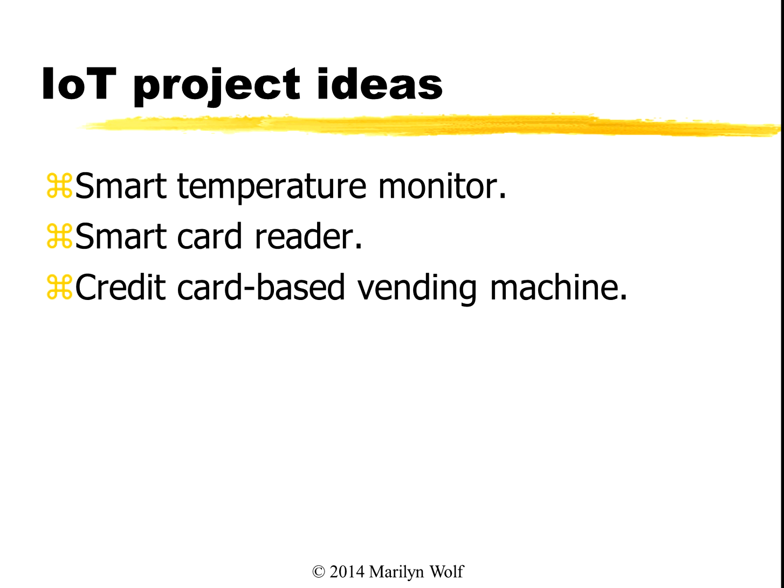What kinds of things can you do? Smart temperature monitors — something that will read temperature, send it up to a database, and maybe look for trends in that data. Smart card readers, so that for instance you can let a person into a room. A related idea is a vending machine — a machine that will read something about payment, ask the user what snack they want, and then vend out the snack for them.